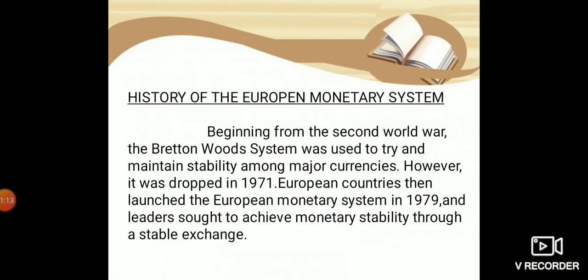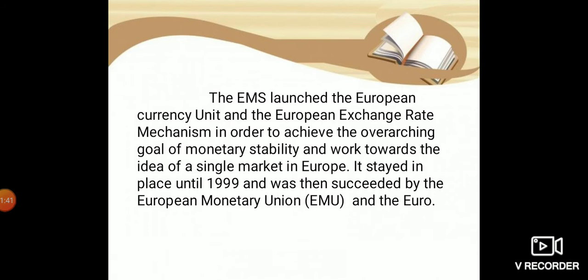History of the European Monetary System: Beginning from the Second World War, the Bretton Woods System was used to try and maintain stability among major currencies. However, it was dropped in 1971. European countries then launched the European Monetary System in 1979, and leaders sought to achieve monetary stability through a stable exchange rate. The EMS launched the European Currency Unit and Exchange Rate Mechanism in order to achieve monetary stability and work towards a single market in Europe. It stayed in place until 1999 and was then succeeded by the European Monetary Union and the euro.